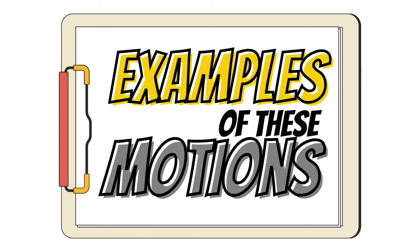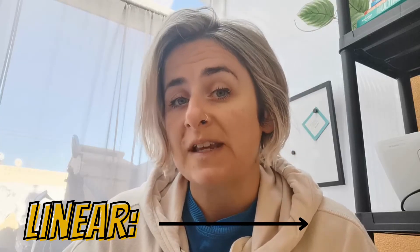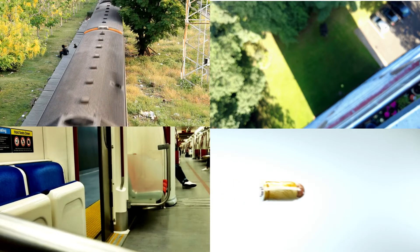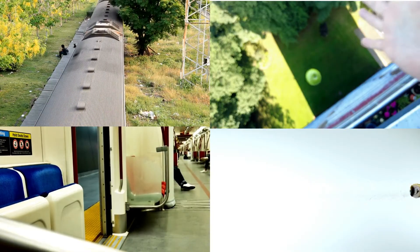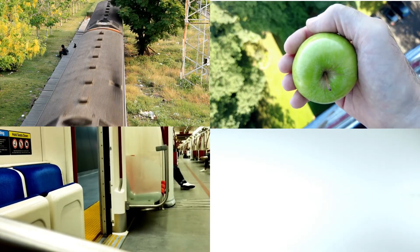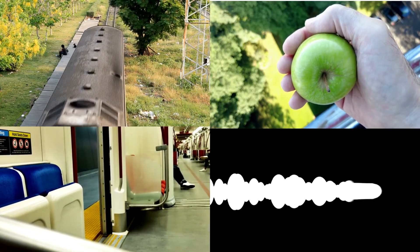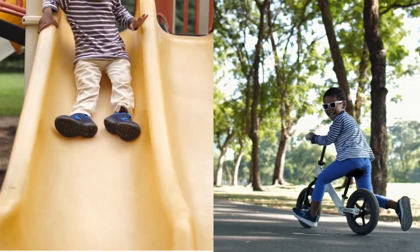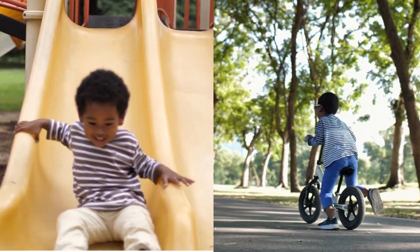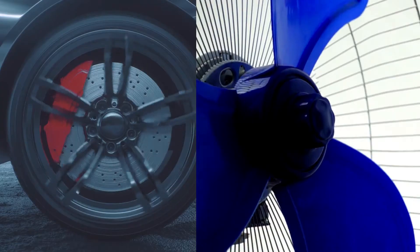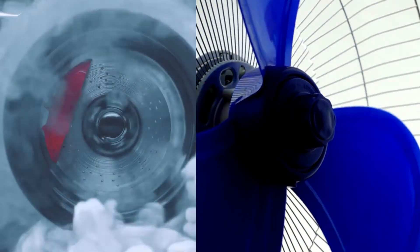For examples of these motions: linear moves in a straight line, like a train moving down a track, a sliding door within a frame, the firing of a bullet, an apple free-falling from a tree, a child sliding down a slide, or riding a bicycle. Rotary moves in a circle — a good example is a wheel or a fan.